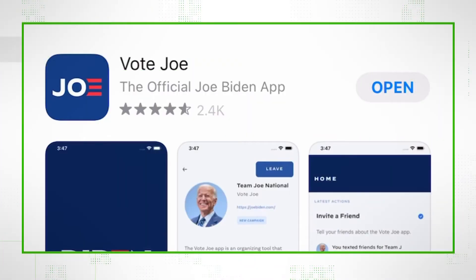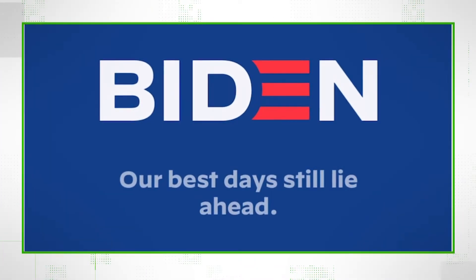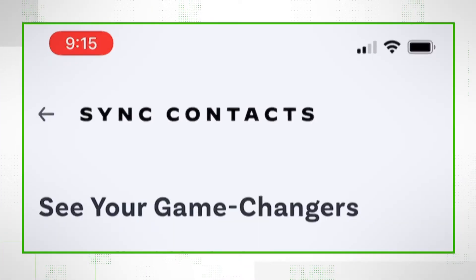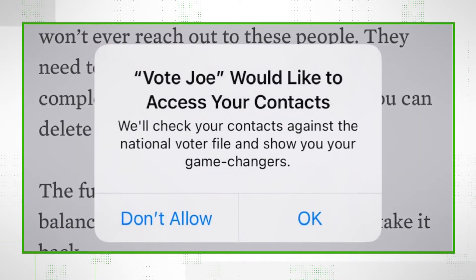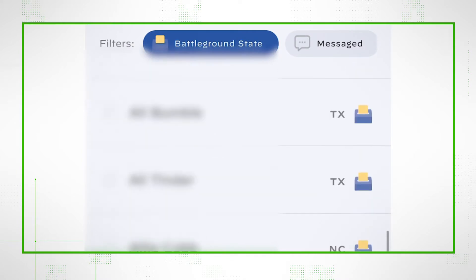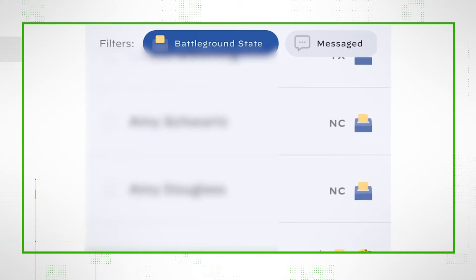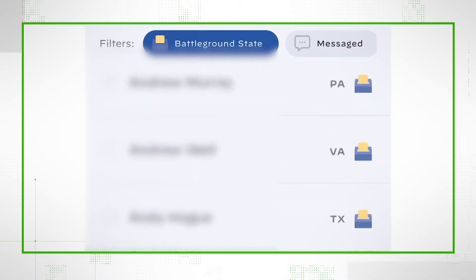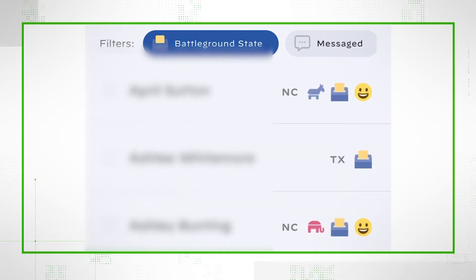If you install the Vote Joe app, you wind up at a page where it asks to see your contacts. If you click yes, it gives you a list of all your contacts with a little image next to them. A donkey means registered Democrat, an elephant means registered Republican, a ballot symbol means they're in a battleground state, and you get a smiley face if you vote often and a sleepy face if you don't.